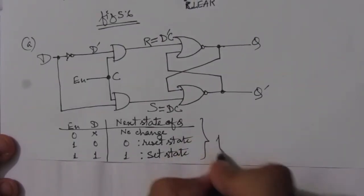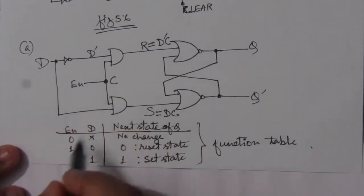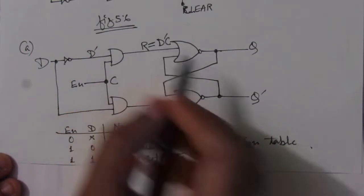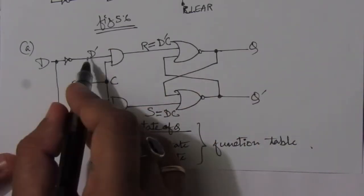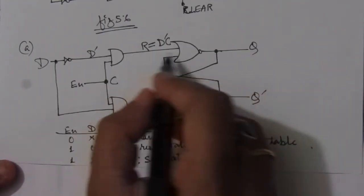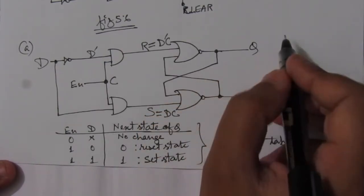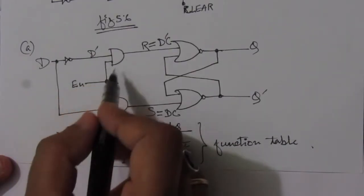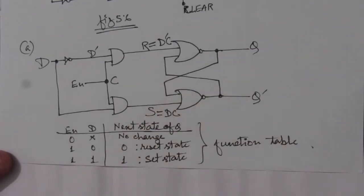Now let us verify this function table. When enable is 1 and D is 0: D-bar will be 1, so R = D-bar·C = 1·1 = 1. Since any NOR gate input being 1 makes the output 0, the output will be 0. This confirms that when D=0 with enable=1, the output Q is 0.